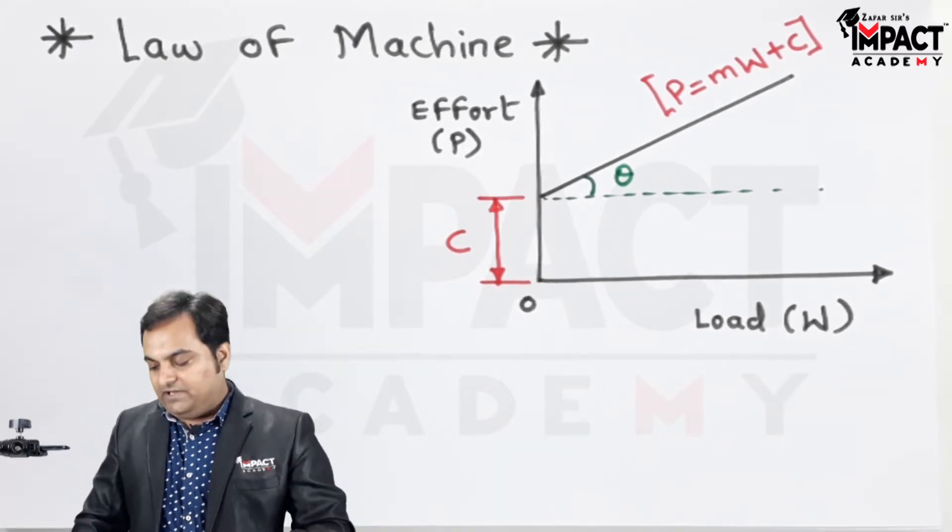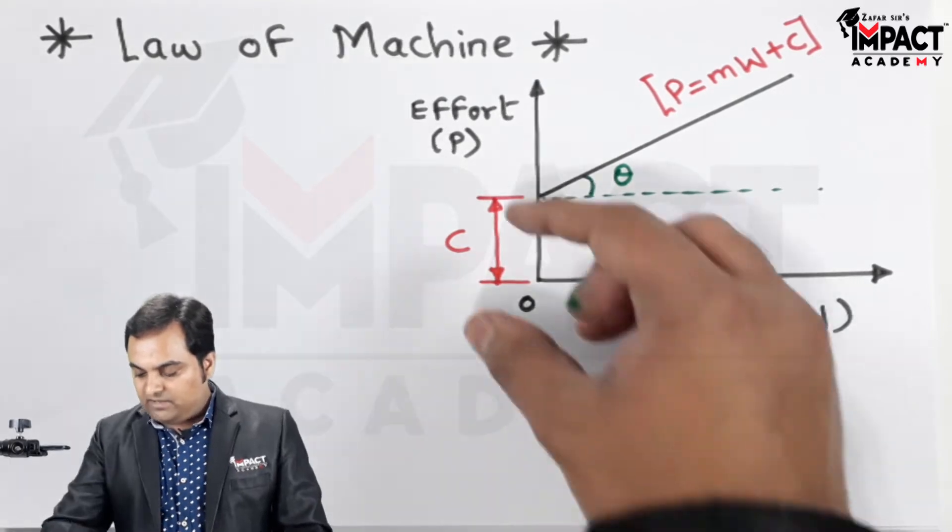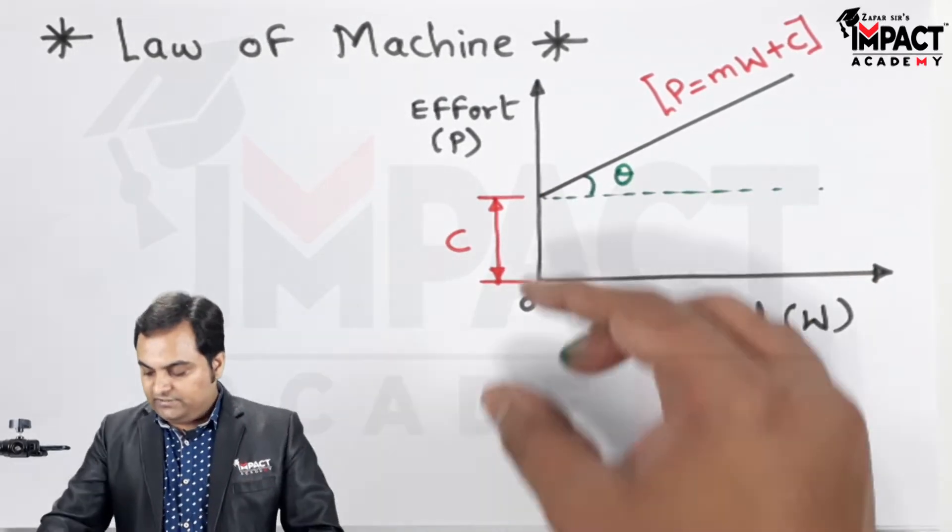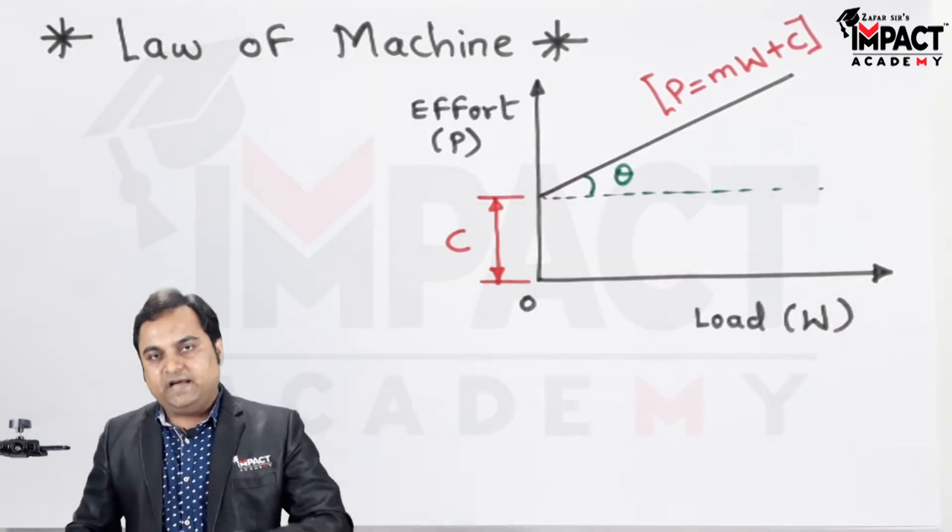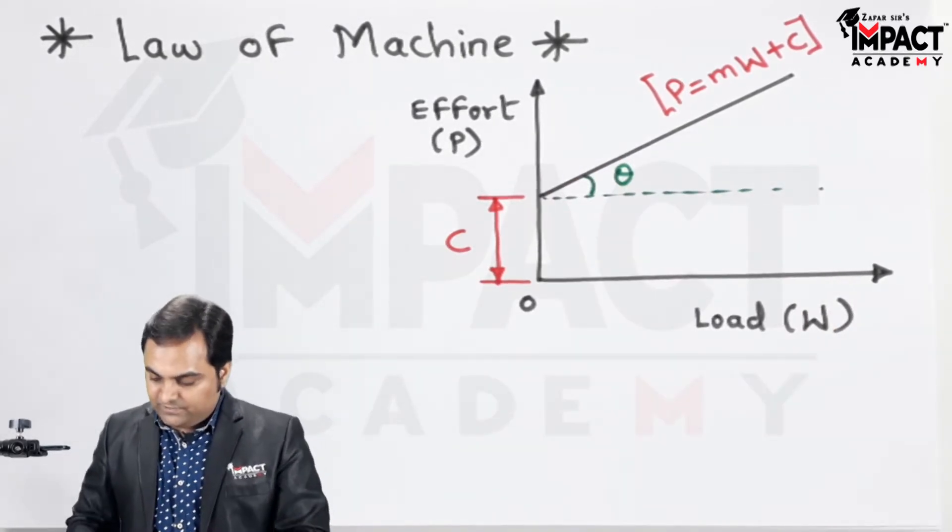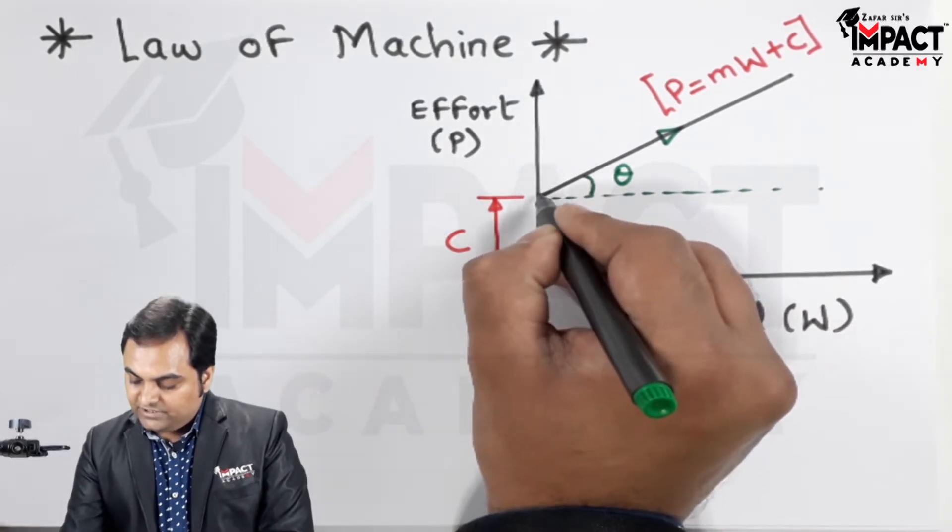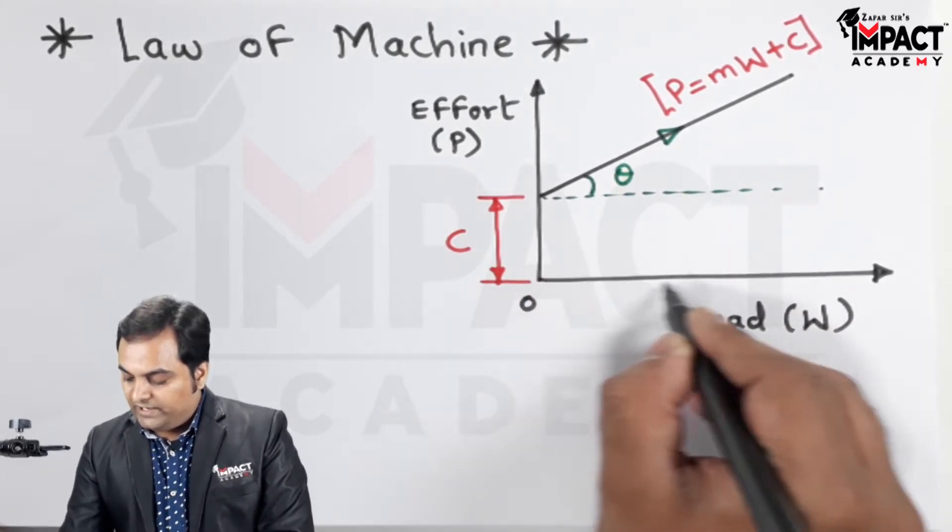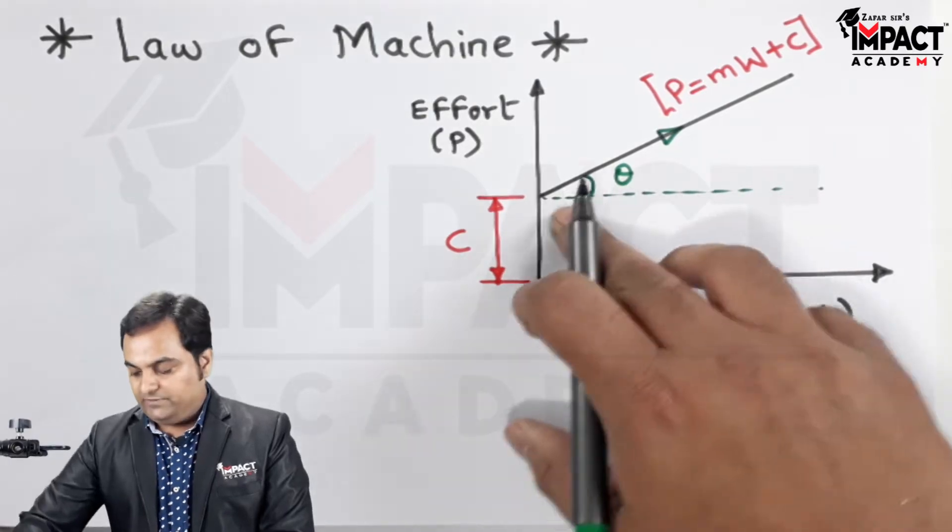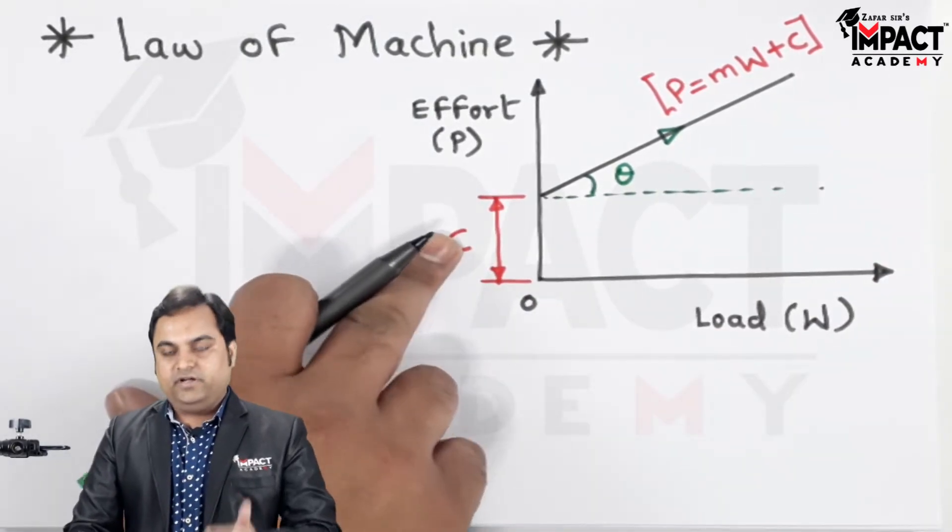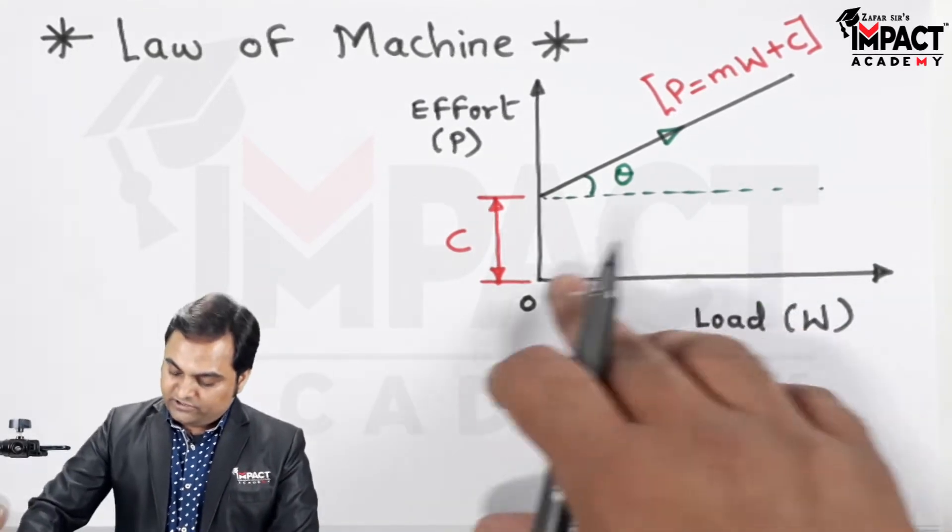In case of a simple machine, some amount of effort is spent in overcoming friction, that is denoted by C. And after that, the relationship is linear. That is, if we go on increasing the effort, the load value increases. So it becomes a linear relationship only after overcoming the effort C.